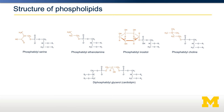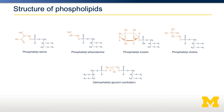Different phospholipids are dictated by the different head groups. Shown here are several different head groups. In the top row, you can see phosphatidylserine, phosphatidylethanolamine, phosphatidylinositol, and phosphatidylcholine. For each of these, there's a different head group shown in red, and then there are two fatty acid chains abbreviated as R1 and R2 to save space. The different head groups dictate the different function of those different phospholipids — some head groups are better for different membranes.